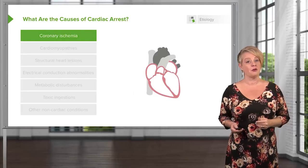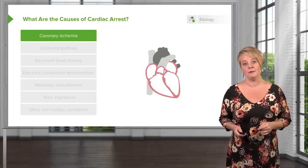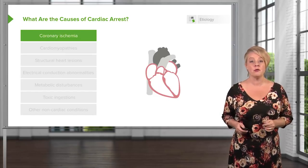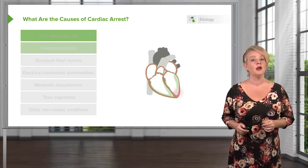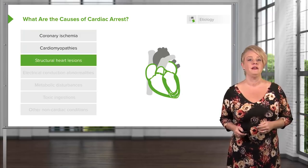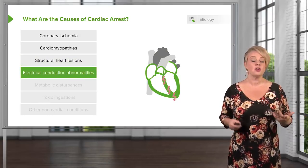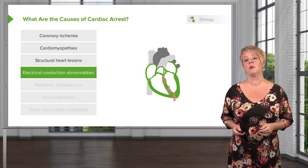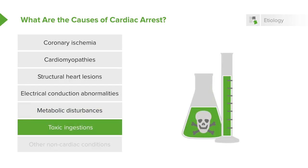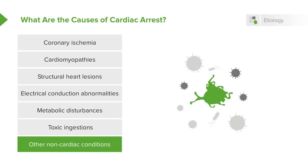The primary cause of cardiac arrest, first and foremost, is coronary ischemia — the whole world over, that is the number one cause. But there are other things that can lead to cardiac arrest as well, including cardiomyopathies, structural heart lesions such as valvular disease, electrical conduction abnormalities such as Brugada syndrome or other channelopathies, metabolic disturbances particularly those in electrolytes, toxic ingestions, and a number of other non-cardiac conditions that can lead the heart to stop.